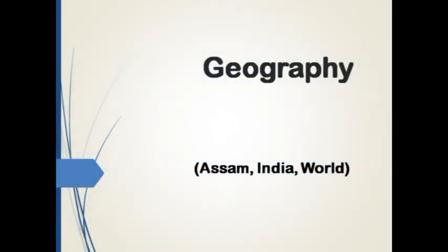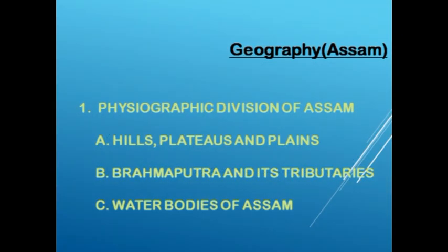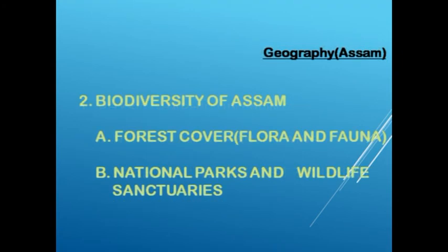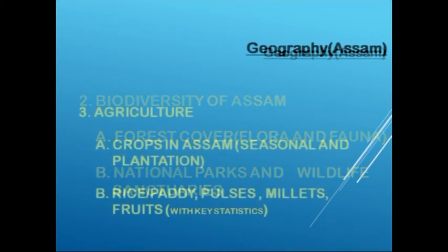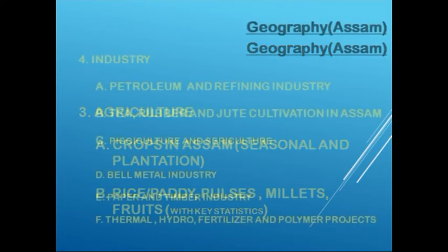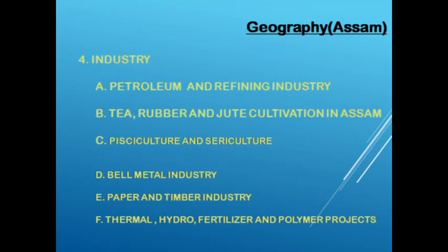Having covered history, now we are good to go with geography. We need to study the geography of Assam, India, and the world. For Assam geography, study the physiographic divisions — hills, plateaus and plains, the Brahmaputra and its tributaries, and water bodies of Assam. Then biodiversity: forest cover, flora and fauna, national parks and wildlife sanctuaries. Then agriculture: crops in Assam — both seasonal and plantation — rice, paddy, pulses, millet, and fruits with key statistics. For industries, focus on the petroleum industry, tea, rubber and jute cultivation, pisciculture and sericulture, bell metal industry, paper and timber industry, and thermal, hydro, fertilizer, and polymer projects.